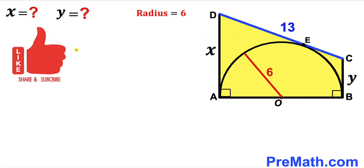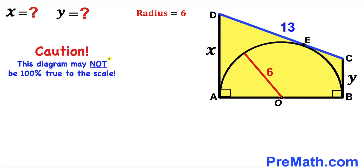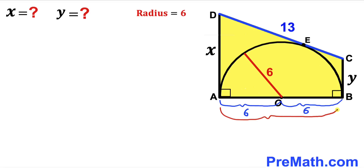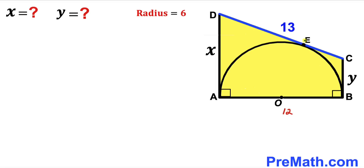Please keep in mind that this figure may not be 100% true to scale. The radius of this semicircle is 6 units. Since AO is the radius, AO equals 6, and likewise OB is also 6. Therefore the whole length AB, which is the diameter, is 12 units. Now let's observe that point E is the point of tangency.